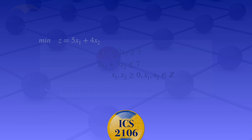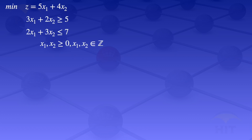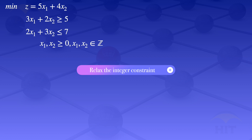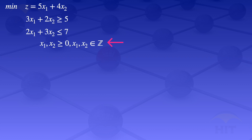We are given this integer programming problem — it's called integer programming because we have a constraint saying that the variables x1 and x2 are integers. To solve integer programming problems we can start by relaxing this integer constraint, treating it as if it's not there, so that what we have left is just an ordinary linear programming problem. To solve the linear programming problem I will use the graphical method.